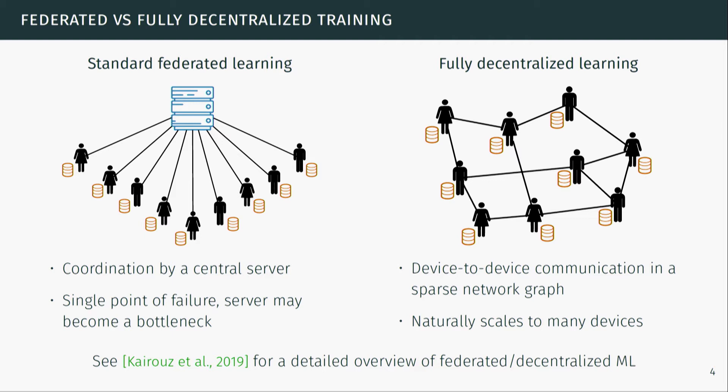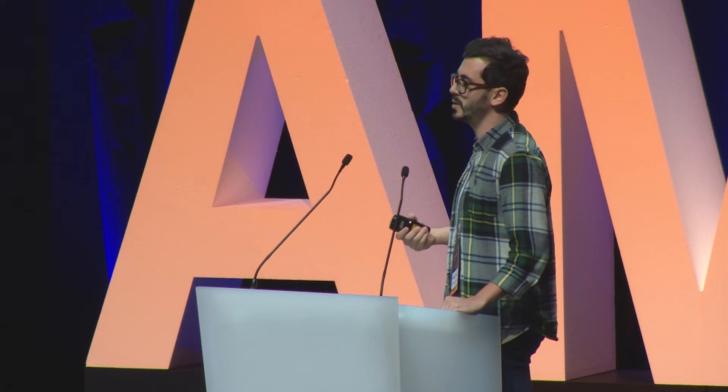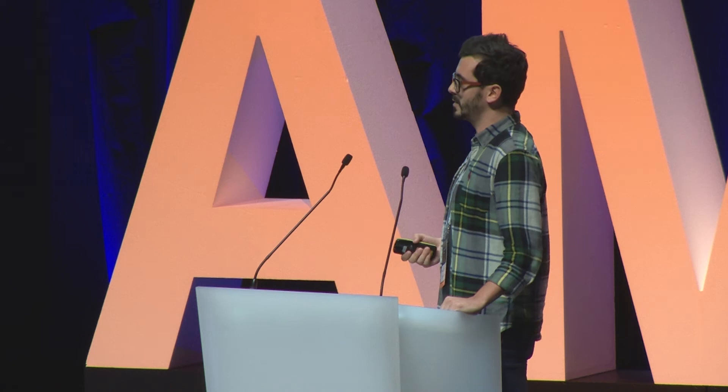If you want to train machine learning models over a large number of devices, you have to think about the network architecture. There are two main options. The first is the federated learning setting, where a central server coordinates the process, initializes the model, sends it to devices, the devices compute an update based on local data, send it back, and the server aggregates it. Having a central server is convenient from a design perspective, but it represents a single point of failure and can become a bottleneck when the number of devices is very large.